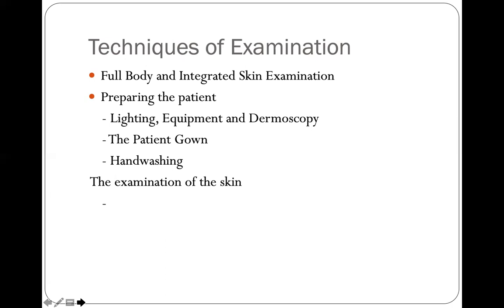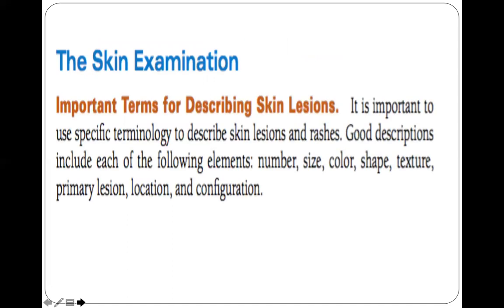There are four cardinal techniques in physical examination: inspection, palpation, percussion, and auscultation. But for examination of the skin, you only use inspection and palpation. When describing a skin lesion, you describe it according to its number, size, color, shape, texture, whether it is a primary or secondary skin lesion, location, and configuration.